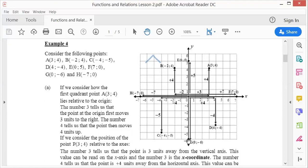G is x zero and y minus six. This should be on the y-axis. And H, minus seven: x minus seven, y zero, should be a point on the x-axis.